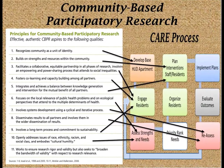Principles for community-based participatory research: there are 11 principles and I'd like to demonstrate how they interact with the CARE process. Number one is to recognize the community as a unit of identity — an element of developing the base and engaging the residents. Two, build on strengths and resources within the community — this would come about after the assessment of needs and assets into the planning phase. Three, facilitate a collaborative, equitable partnership in all phases of research involving an empowering and power-sharing process that attends to social inequalities — again, the engagement of residents and the community action team in assessing and recommending change.